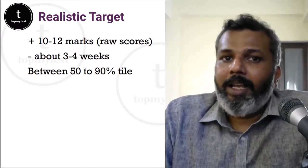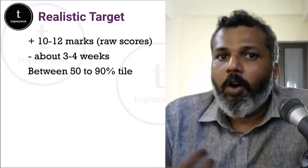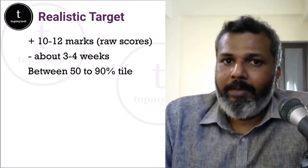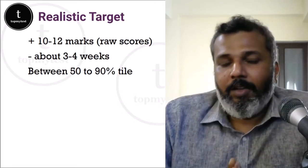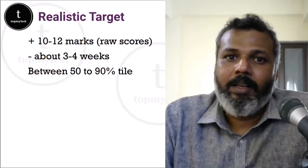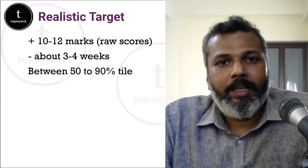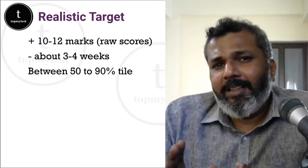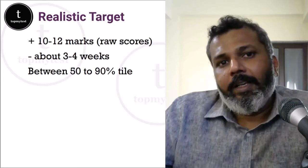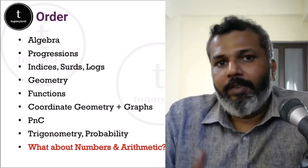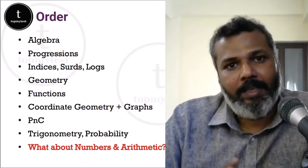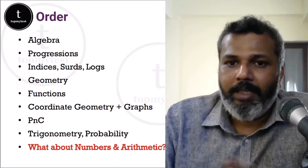A lot of people ask: can I reach 99.5 percentile or above in three or four months? Nothing is impossible, but if you're starting from absolute scratch, I would say it's most likely improbable — almost impossible to reach that. But that should not deter you from improving your score as much as possible. If you plan the order in which you study for every three to four weeks, you should be able to reach 90 to 95 percentile by November pretty easily.